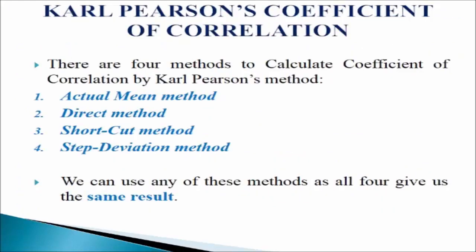Next we come to the calculation of Karl Pearson's coefficient of correlation. There are four methods to calculate the coefficient of correlation by Karl Pearson's method: actual mean method, direct method, shortcut method, and step deviation method. We can use any of these methods as all four methods give us the same result. Let us study these methods in detail one by one in the coming slides.